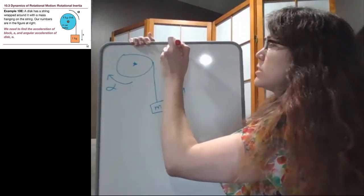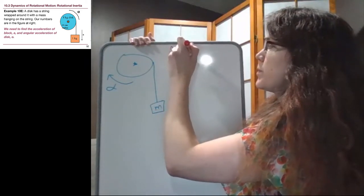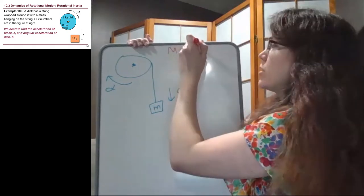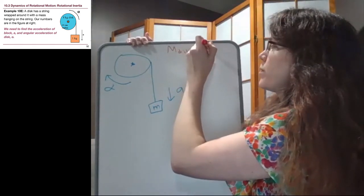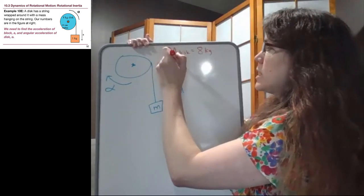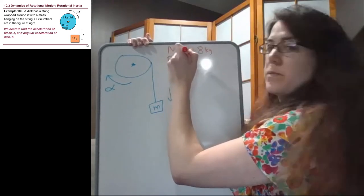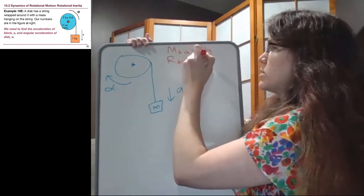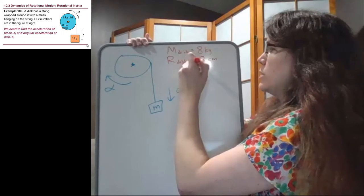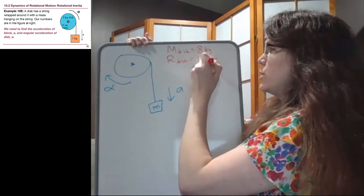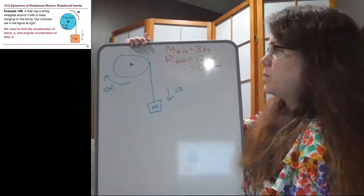For the disk, the mass of the disk is 8 kilograms, and the radius of the disk is 12 centimeters, which is 0.12 meters.